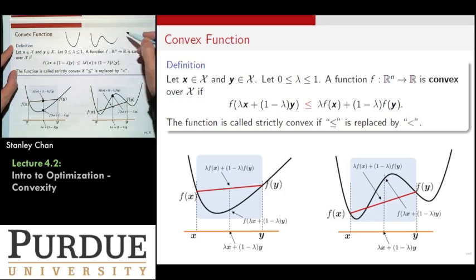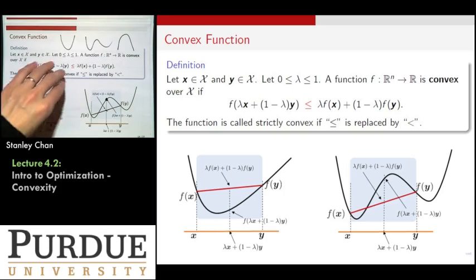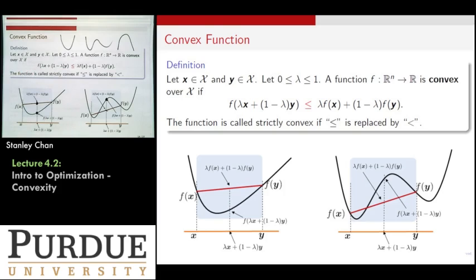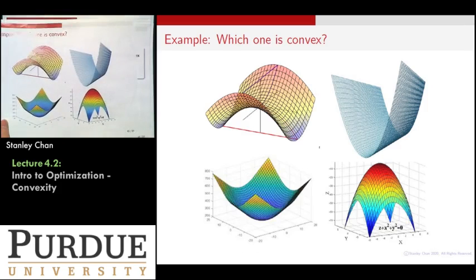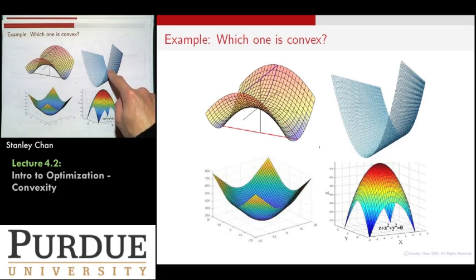So if you want to draw a simple picture of what is convex, well, this is convex. This is not convex. This is called concave. So convex functions is defined as functions whenever you have a positive curvature. Or you satisfy this criteria where you draw a straight line. The straight line is always above all the values under the curve.